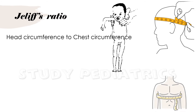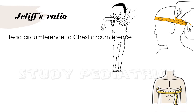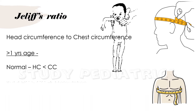Jellif's ratio deals with a comparison between head circumference and chest circumference. In a child more than 1 year of age who is normal, head circumference is less than chest circumference. But if the head circumference is more than chest circumference in a child above 1 year, then it indicates malnutrition.